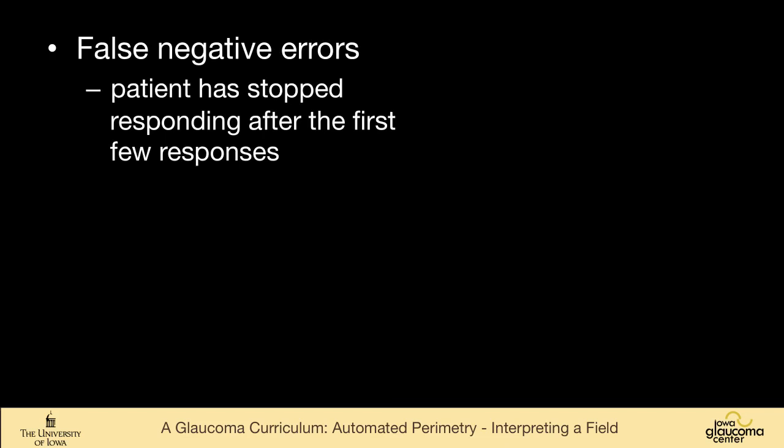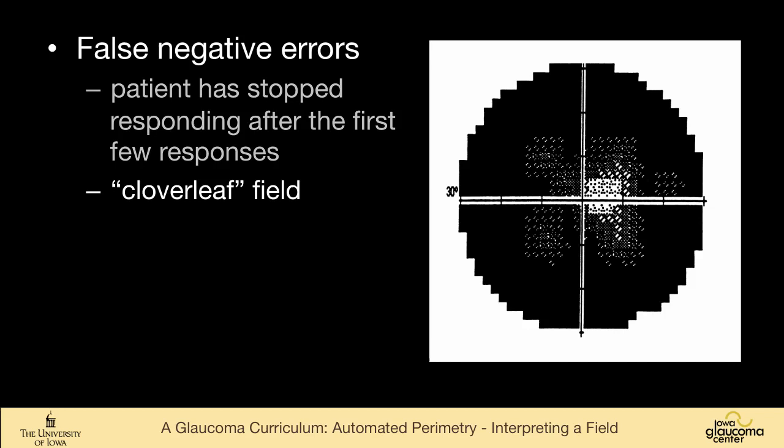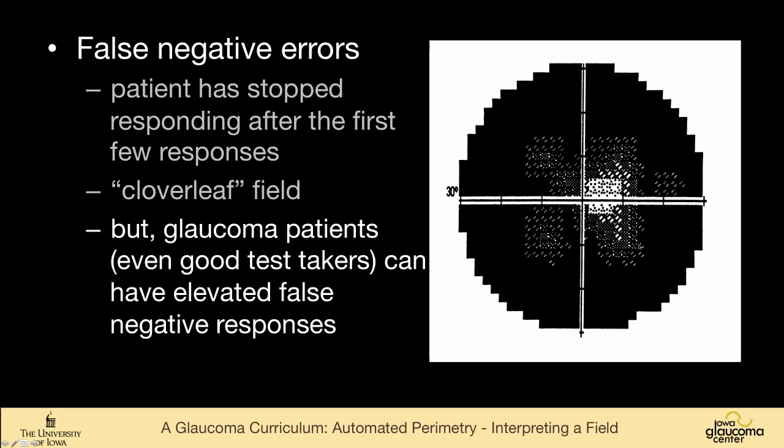False negative errors, and this person, 0% false negatives, is when the machine maps the first few spots, and then goes back and sends a bright light, brighter than what was thresholded into that spot, and the patient doesn't respond. So you often get what's called a cloverleaf field. You can see that the patient has responded to a few of these test points, and then basically has stopped participating in the field.